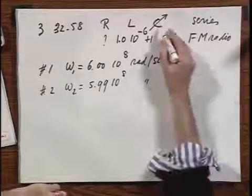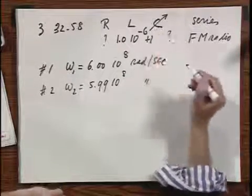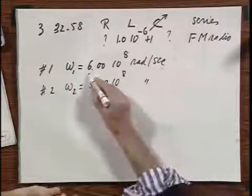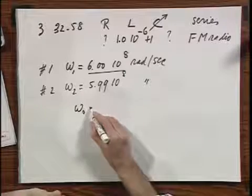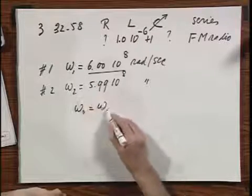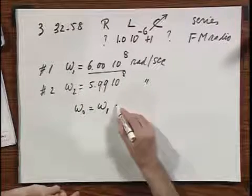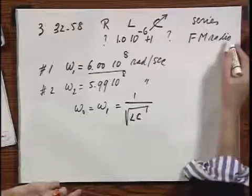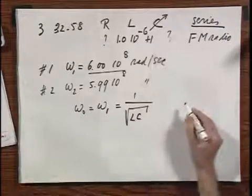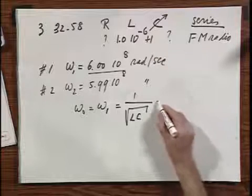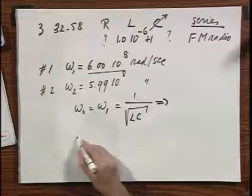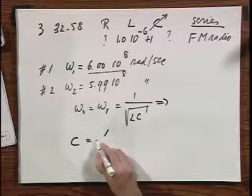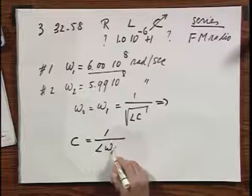Let's first calculate what the value for C is. If I tune exactly in with my variable capacitor on this frequency, then omega 1 must be omega 0 and omega 0 is 1 over the square root of LC as we have seen many times for a series RLC circuit. And so you will find that C equals 1 divided by L omega 1 squared.